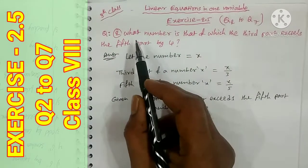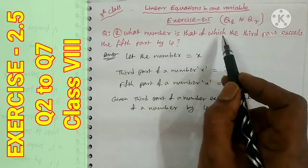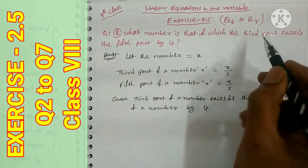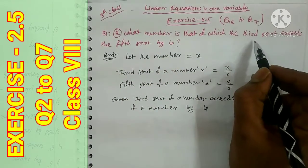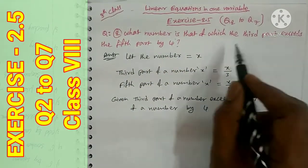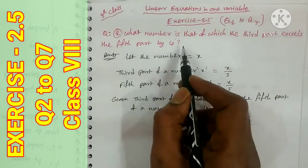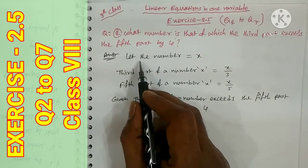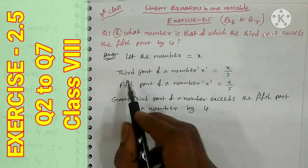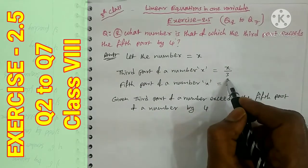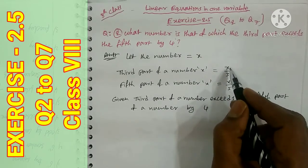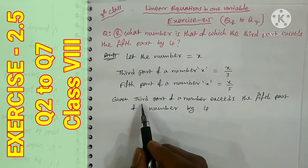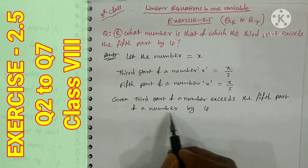Question number 2: What number is that of which the third part exceeds the fifth part by 4? Here one number is given with a condition. We let the number be x. The third part of the number is x/3 and the fifth part is x/5. The condition is: the third part of a number exceeds the fifth part by 4.